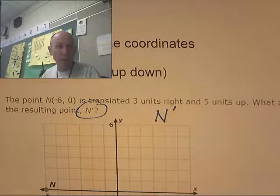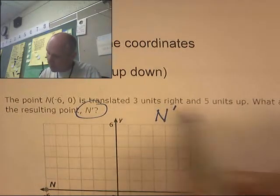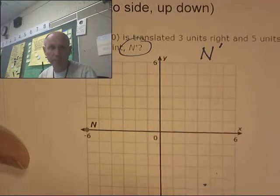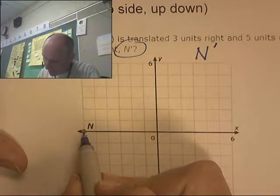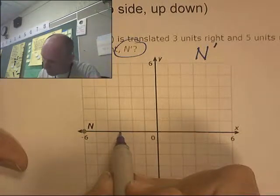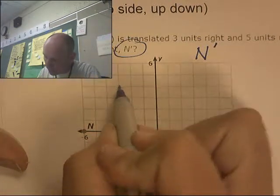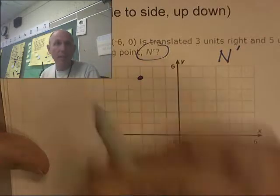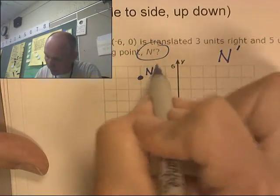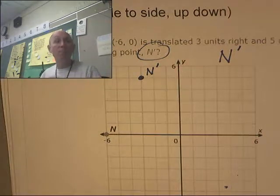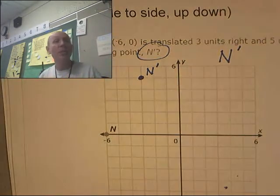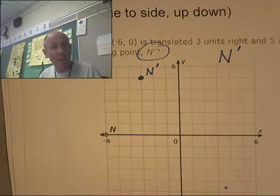The point N at negative six, zero is going to be translated three units right and five units up. I'll find the point on the graph — here's the point — and move three units right: one, two, three, and five units up: one, two, three, four, five. This is now N prime.